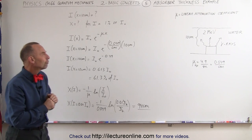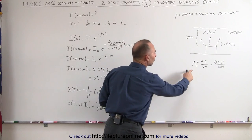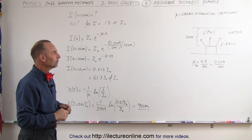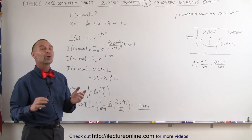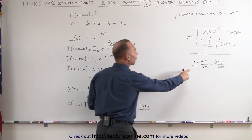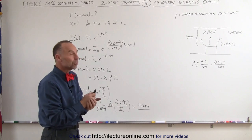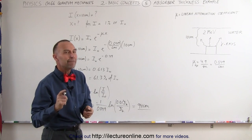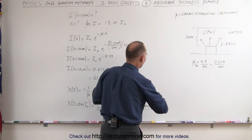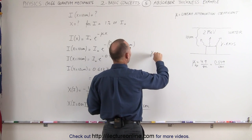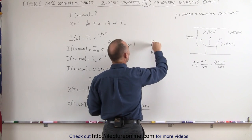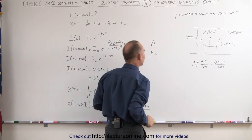When you go look for the linear attenuation coefficient in resources you'll find that often you don't find the linear attenuation coefficient but you find the mass attenuation coefficient. You find the mu sub m rather than the mu sub l. l stands for linear, m stands for mass.